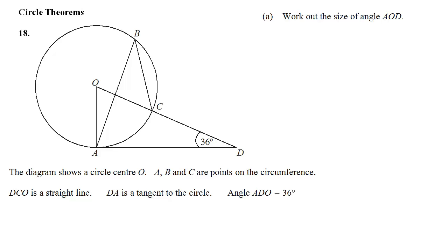First circle theorem question, question 18. We have quite a busy looking diagram here. Let's just check that everything that's written down is on the diagram. So the centre is O, A, B and C are points on the circumference, DCO is a straight line. Yep, that looks pretty straight. DA is a tangent to the circle. That looks obvious from the diagram, but we now know for sure that's what it is.